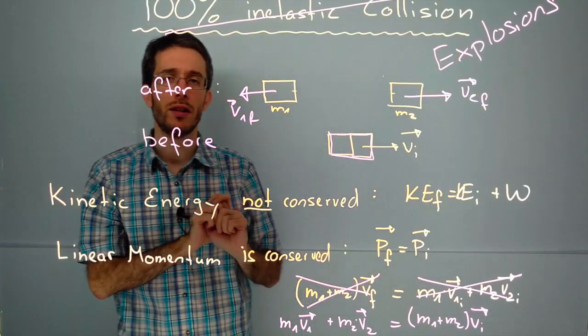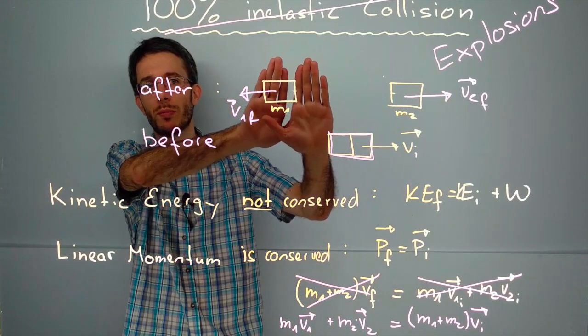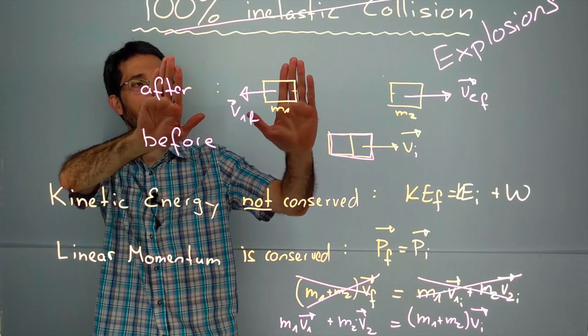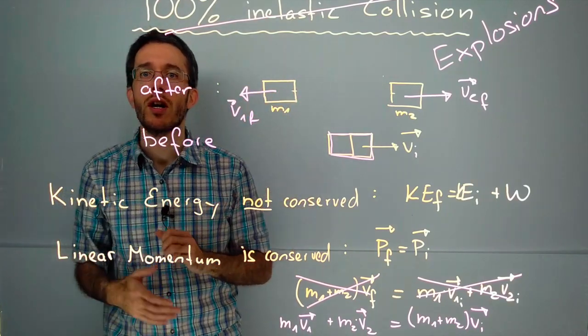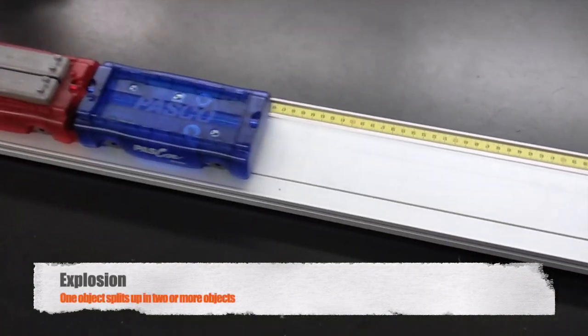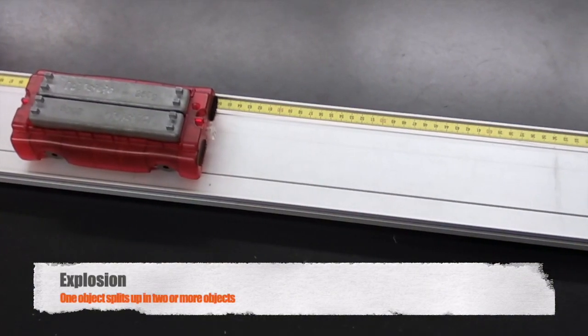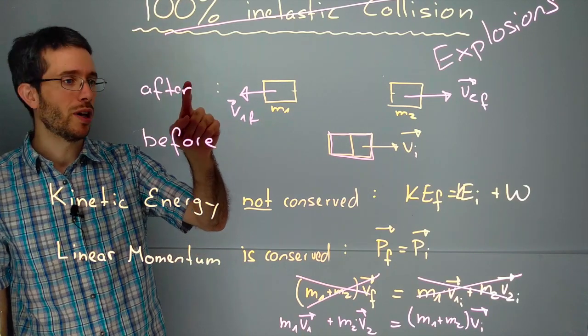Now in an explosion you have one big object that moves together and then is being ripped apart by the explosion and ends up being two objects or more than two objects moving in different directions. So what I had to flip is what we have before and what we have after.